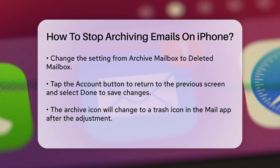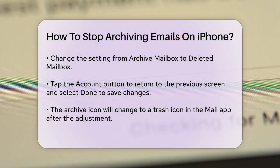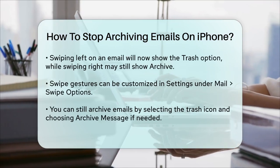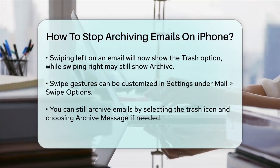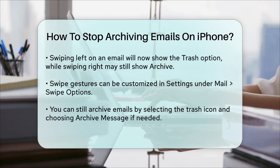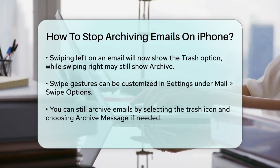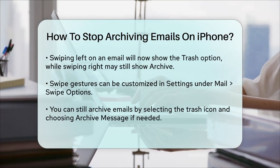This will permanently delete the email instead of archiving it. You might also notice a change in the swipe gestures. When you swipe left on an email in your inbox, it will show the Trash option. And swiping right might show the Archive option, although you can adjust these swipe gestures in the iPhone settings under Mail.